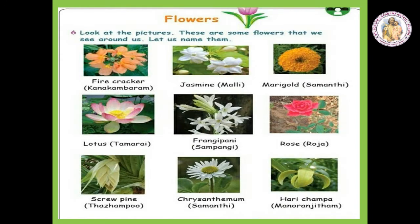Look at the pictures. These are some flowers that we see around us. Let us name them. Firecracker – Kanakambaram. Jasmine – Mulli. Marigold – Samandhi. Lotus – Tamarai. Frangipani – Sampangi. Rose – Roja. Screw Pine – Thalambu. Chrysanthemum – Pinnamam. Samandhi. Harichamba. Manoranjitam.